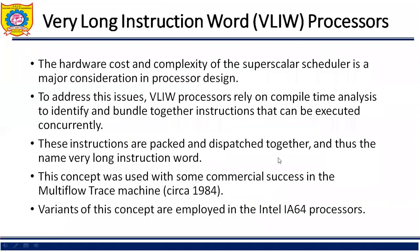In the previous article, we have seen the implicit parallelism, that is trends in microprocessor architecture. Under that, we have seen how pipelining is useful for parallelism. Multiple instruction pipelines are available on microprocessor architecture and that helps to improve the processing power. That type of processor is called a superscalar processor. One of the limitations of superscalar execution is the hardware cost, and the complexity of the superscalar scheduler is a major consideration in processor design.